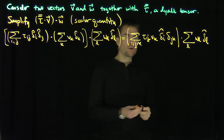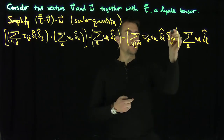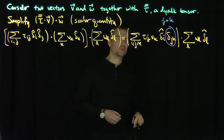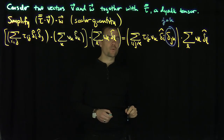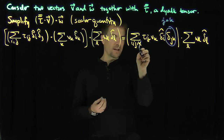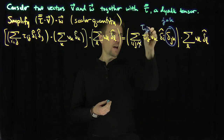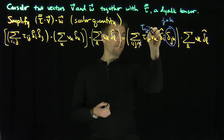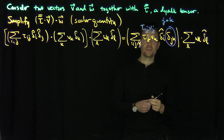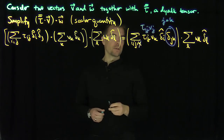Now, this delta_jk forces k to be equal to j. So everywhere we see k, we can get rid of it. Choosing to eliminate k, this turns into tau_ij and then V_j. And that is still a delta-i-hat remaining.